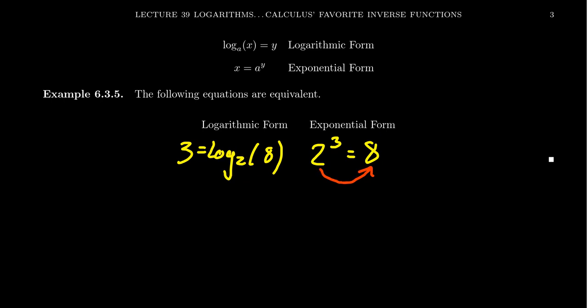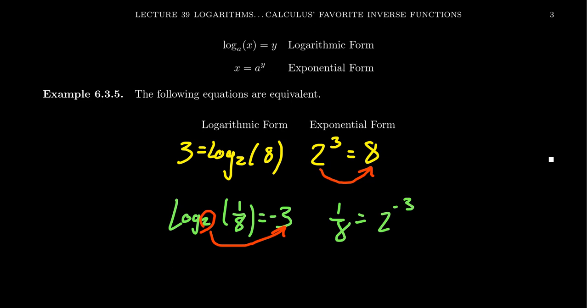Now let's start with the logarithmic form. Log base two of one-eighth equals negative three. If you want to verify this, consider what happens when you move the base two to the other side: you get one-eighth equals two to the negative three. By exponent laws, a negative exponent means taking reciprocals, and two cubed is eight, so two to the negative three is one-eighth. This exponential form is probably more like our native language — it makes sense to us, this is how exponents work. And this exponential statement is true only if the logarithmic statement is likewise true: log base two of one-eighth equals negative three because two to the negative three equals one-eighth.